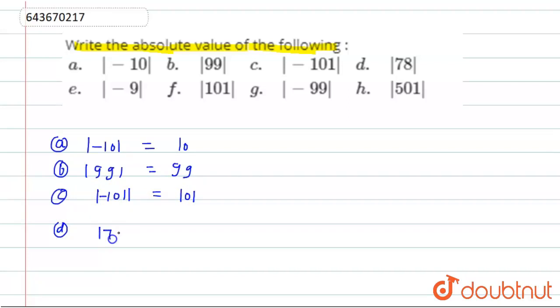Part d, 78. Positive is always positive and negative is always positive for absolute value.